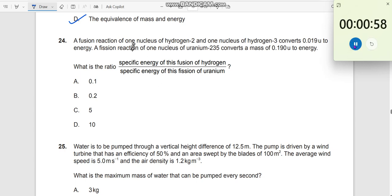Question number 24. A fusion reaction of one nucleus of hydrogen-2 and one nucleus of hydrogen-3. Let us write down the equation to make it more clear. 1H2 plus 1H3. When you fuse these two,